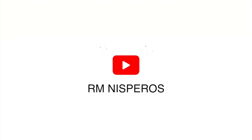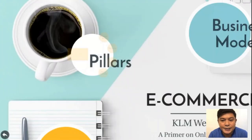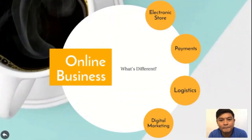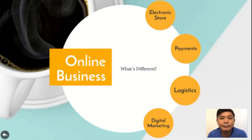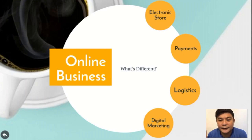Online business is similar to a typical physical store — they're the same except for these four main pillars. For an online business, you first need an electronic store. This is what's visible — it could be a website, an app, or marketplaces like Lazada.